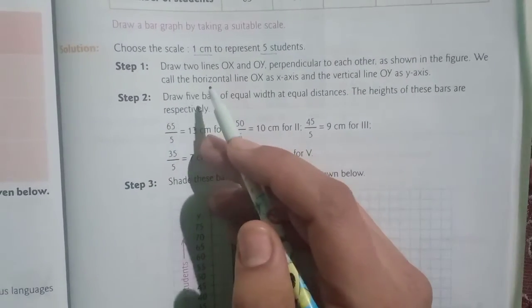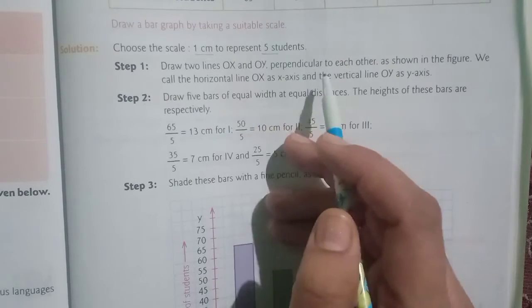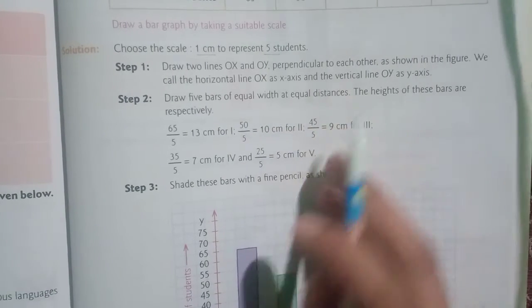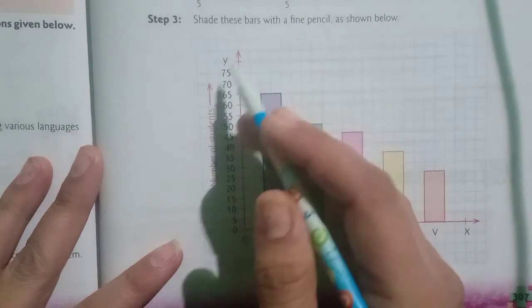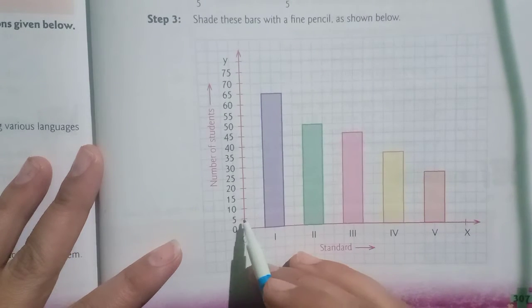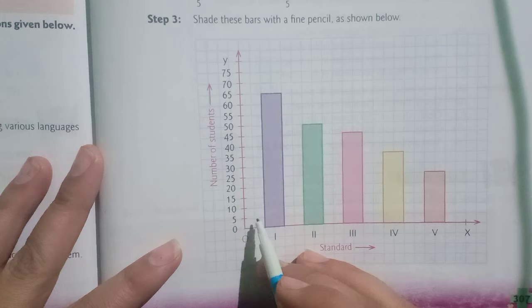Draw two lines OX and OY perpendicular to each other as shown in the figure. They are perpendicular to each other as they are forming a rectangle over here.